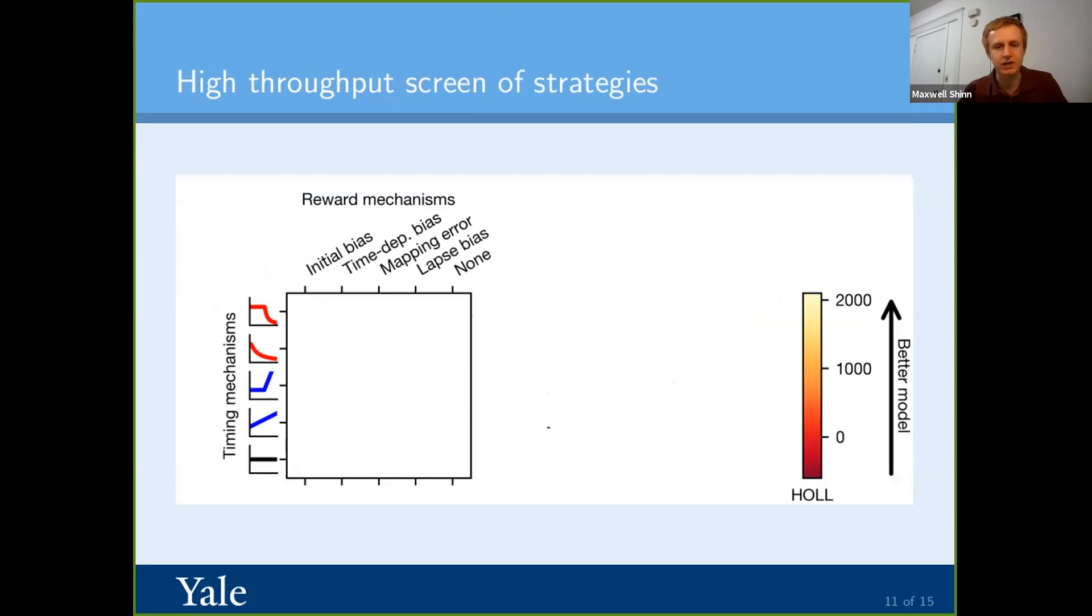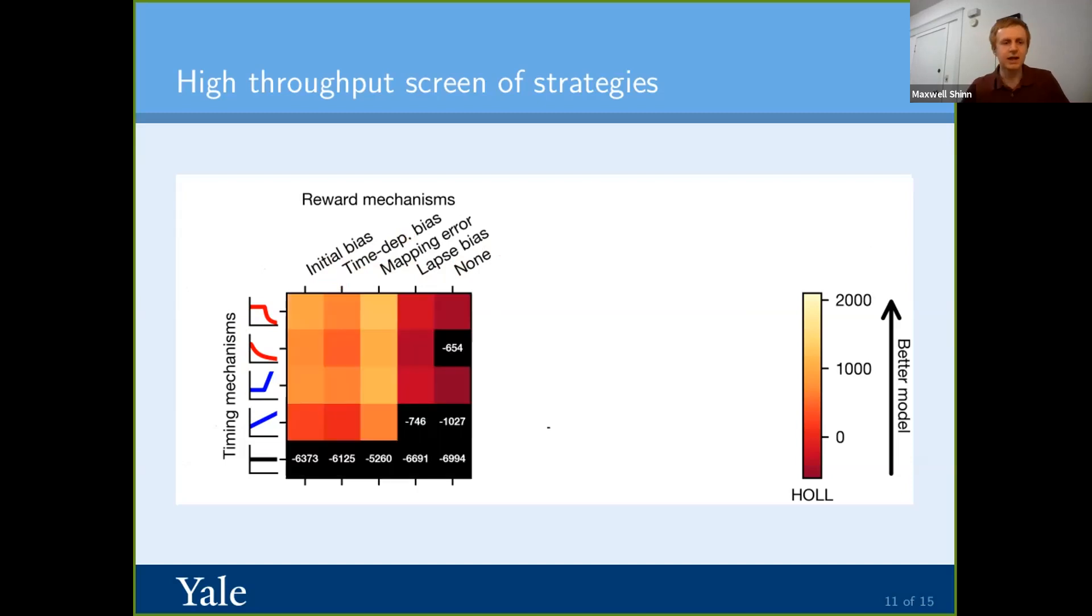And here we're looking at held out log likelihood. Results are basically the same thing for BIC. On the left, you have the different urgency signals, and on the top, you have the different reward mechanisms. And we can see by looking at this, and so the lighter colors mean better models. And when we look at this, we can see, oh look, this mapping error seemed to do pretty well. And also, this delayed collapse, and this delayed gain urgency signal, these also seem to do pretty well. Let's explore this one a little bit more.